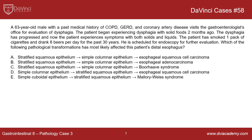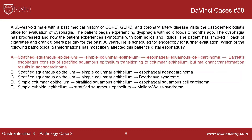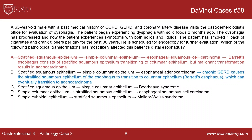Coming back to the question and running through the answer choices again: choice A — the first part is correct, stratified squamous epithelium transitioning to simple columnar, but that doesn't transition into esophageal squamous cell carcinoma. Instead, it's answer choice B, where stratified squamous converts into simple columnar (Barrett's esophagus) and then eventually converts into adenocarcinoma. The way to remember that is that the epithelium essentially converts into the epithelium of the stomach, which is very glandular, and adenocarcinoma is essentially a glandular cancer.